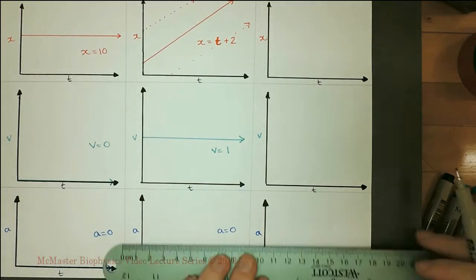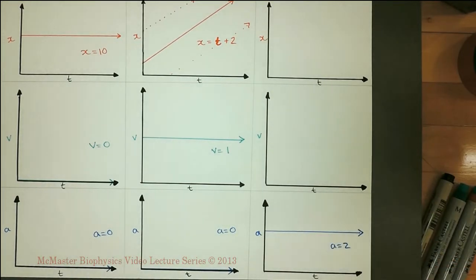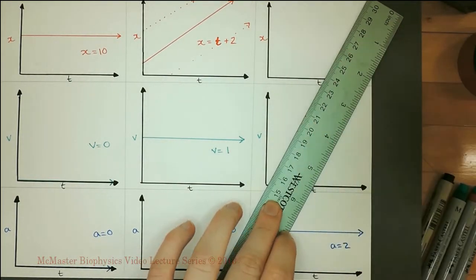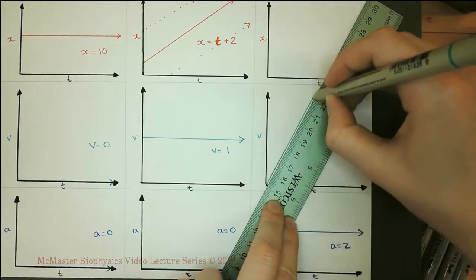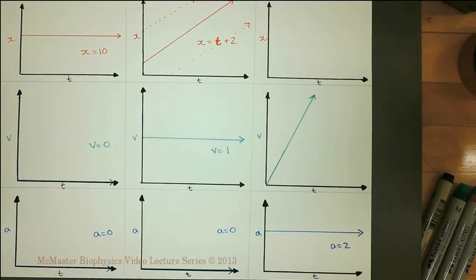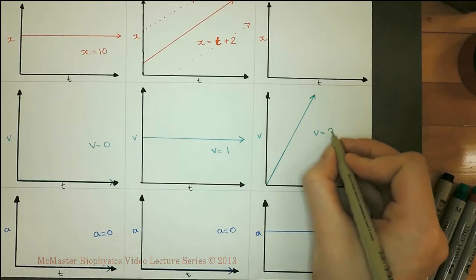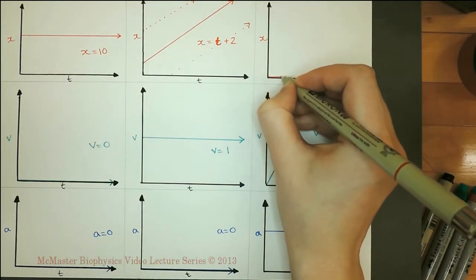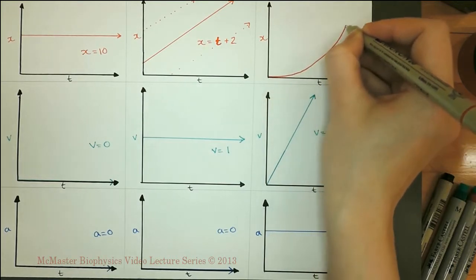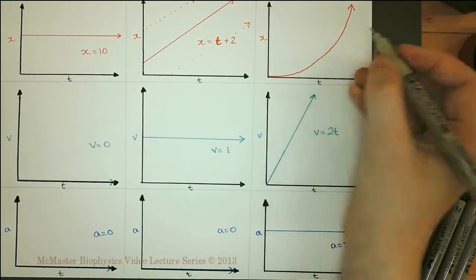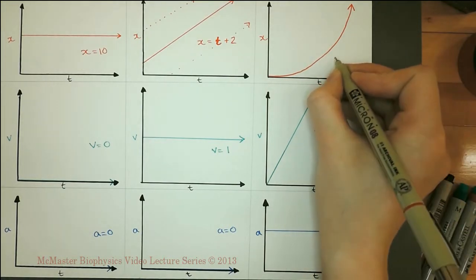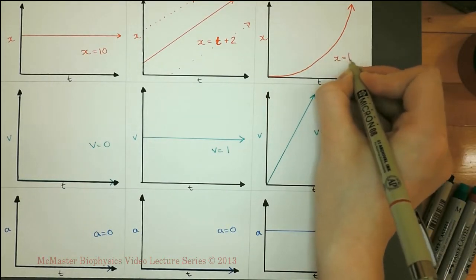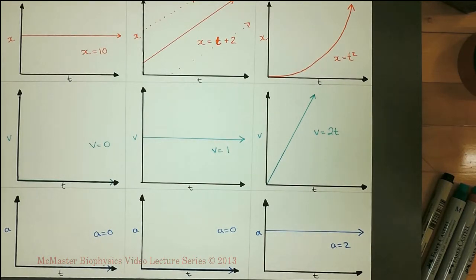Finally, we look at an object with constant acceleration. The velocity is a straight line with positive slope because the acceleration is positive. The intercept of the velocity-time curve cannot be determined from the acceleration-time curve, so we have chosen the initial velocity to be zero. The intercept for the position-time curve will also be zero for simplicity. The position-time curve increases in slope because the velocity-time curve increases. The position-time curve for constant acceleration has a quadratic, also known as parabolic, shape.